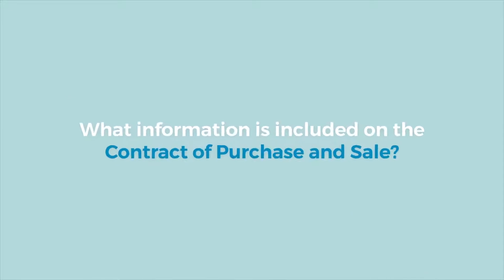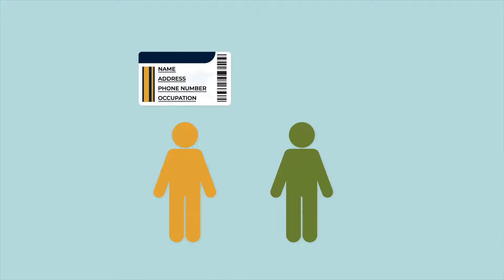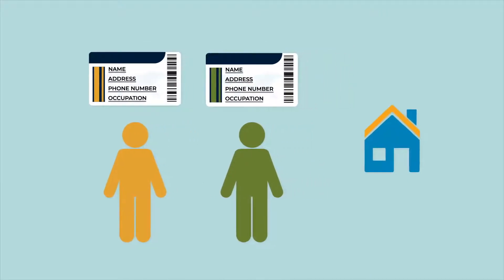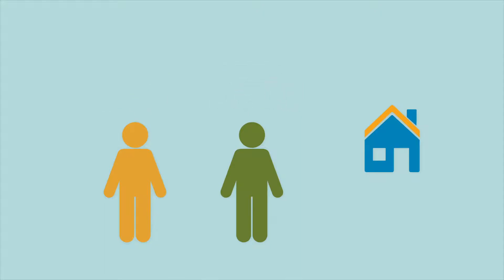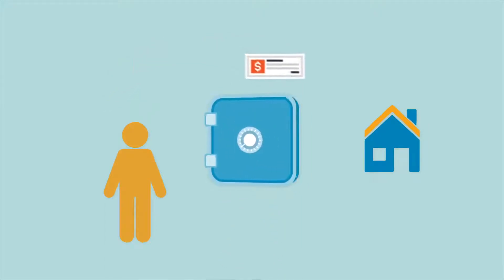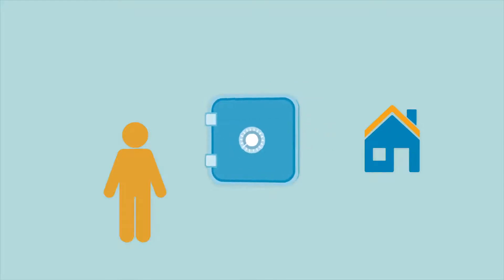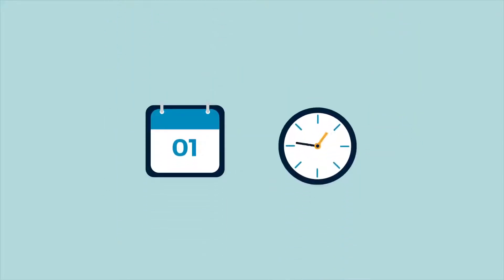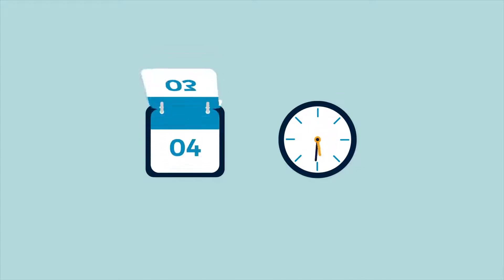What information is included on the contract of purchase and sale? The contract will include basic information about the buyer, the seller, and the property. It will also include the purchase price being offered by the buyer, whether there is a deposit being paid, how much that deposit is, and who will hold that deposit. It also includes the date and time that the offer expires. This period may be days or hours.